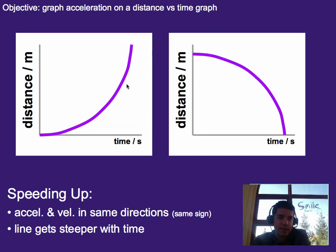So now that we've talked about the fact that acceleration means a curved line, let's talk about what it looks like a little bit more. So we've got distance versus time graphs here. Speeding up means that acceleration and velocity are in the same direction, meaning the same sign. They're either both positive or both negative. So what that means is your line is going to get steeper with time.